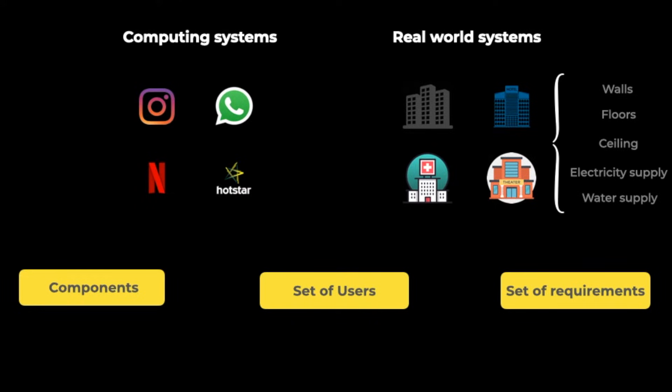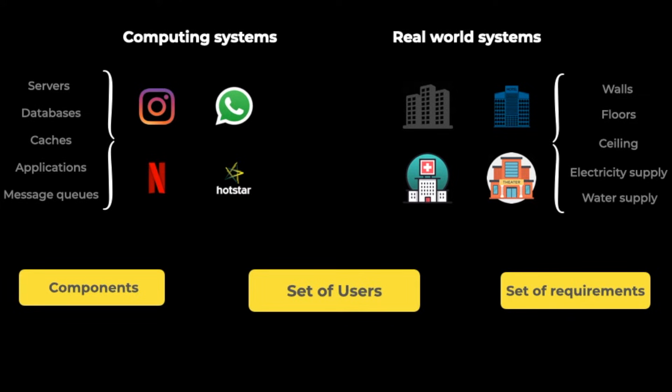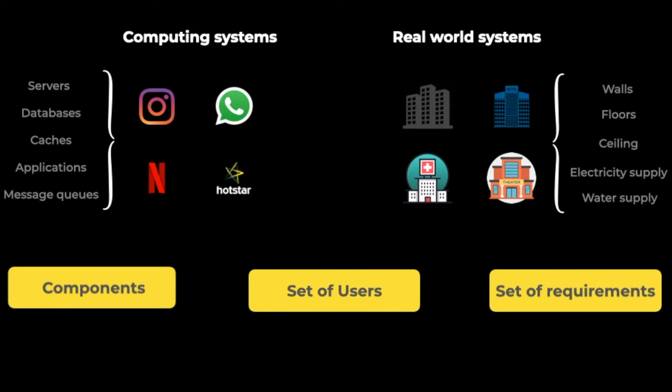But different buildings serve different users with different set of requirements. Similarly, in software systems, even though basic building components are same, but they serve different kind of users with different set of requirements. So a system can be defined and built keeping these three factors in mind: the users of the system, the requirements of those users, and the components that are chosen in order to build that system to serve those users and their requirements.